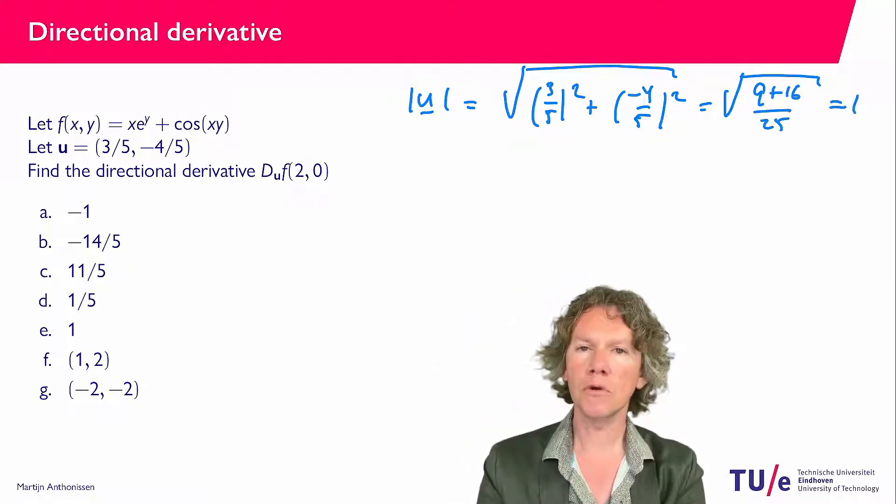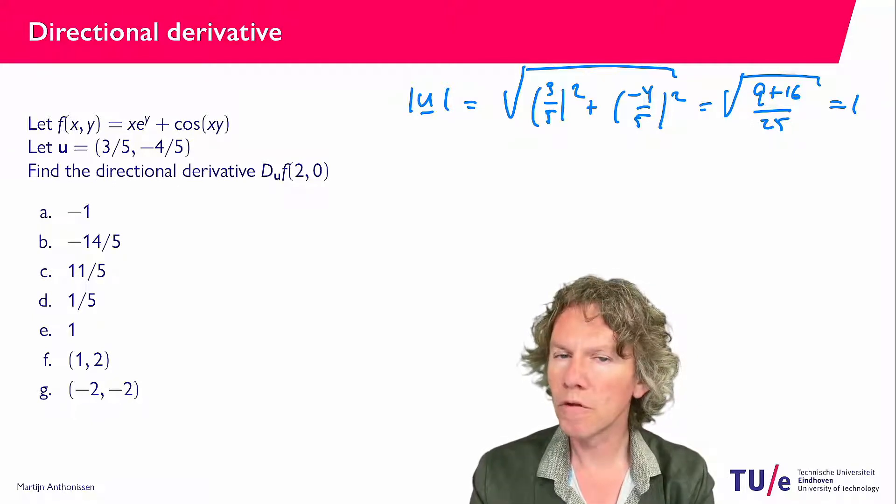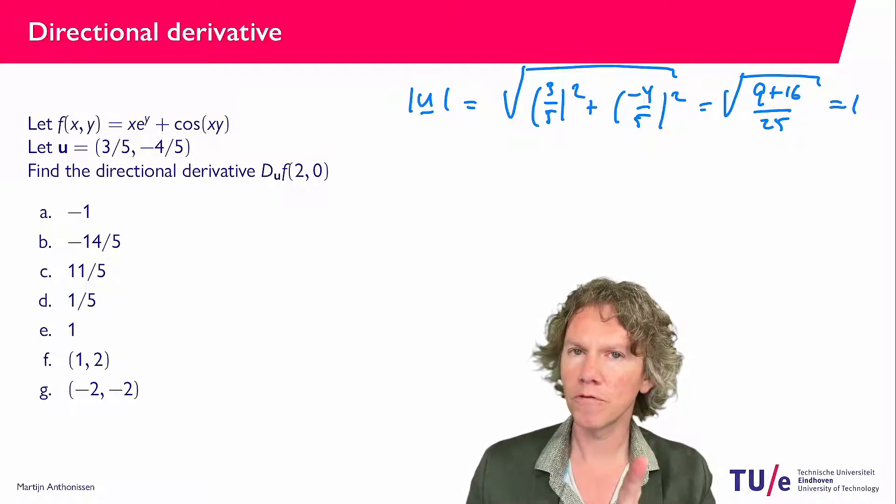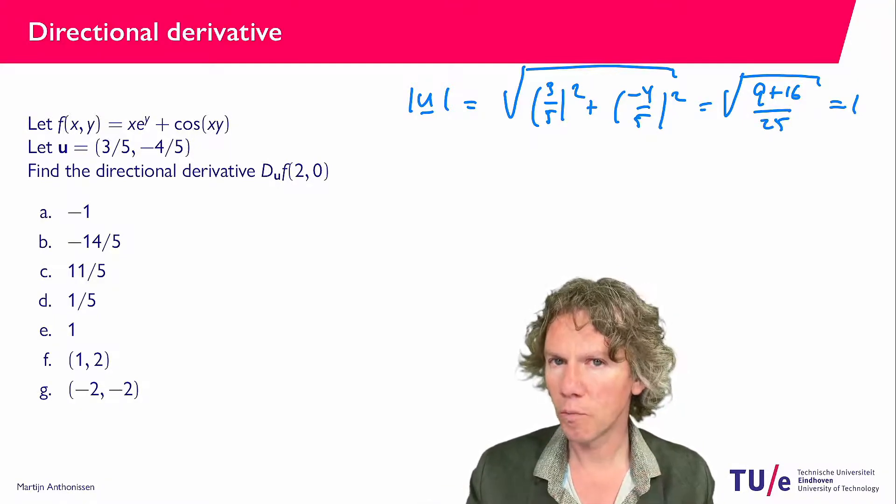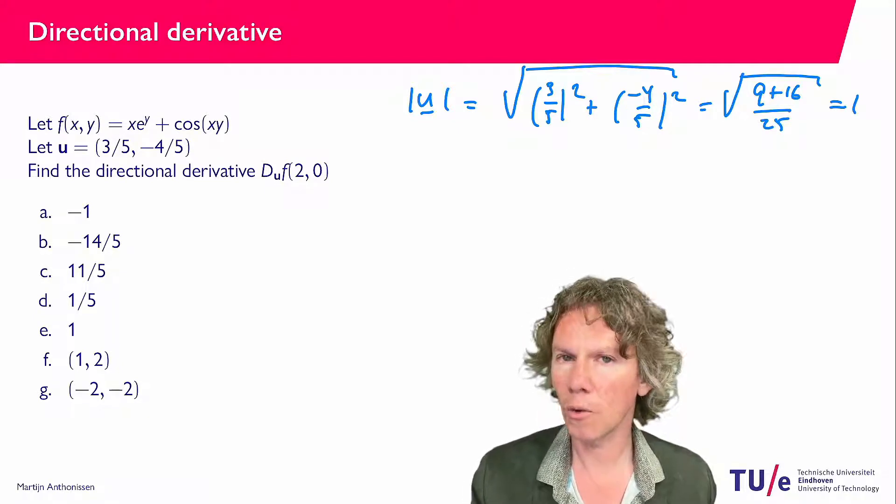Indeed, our vector has length 1, and hopefully you recall that normally for directional derivatives we choose a vector that should have length 1, and then we look at how the function changes if we would walk in that direction.